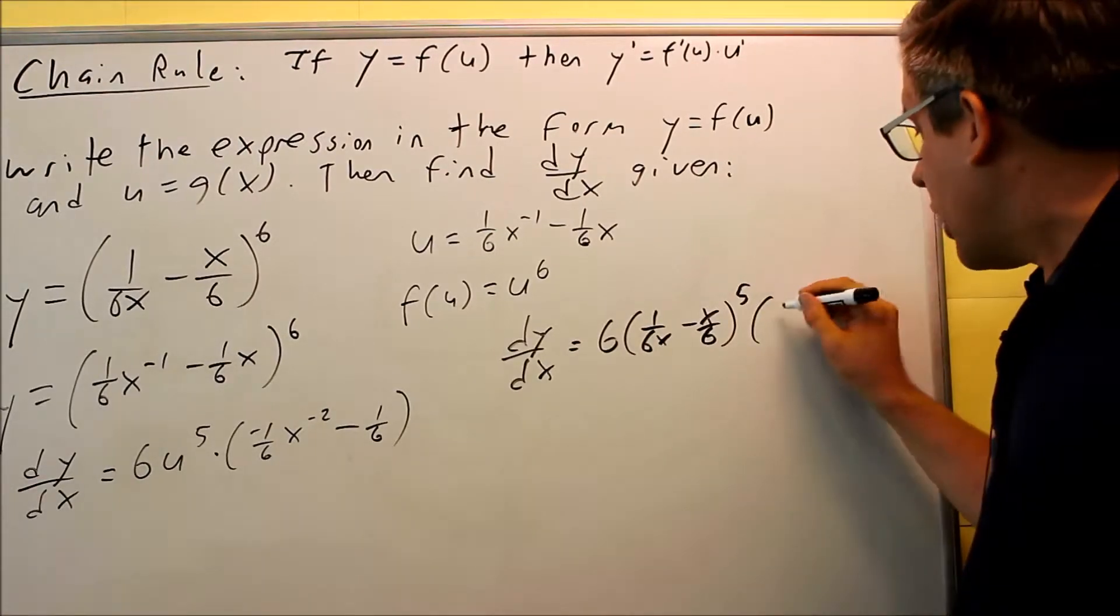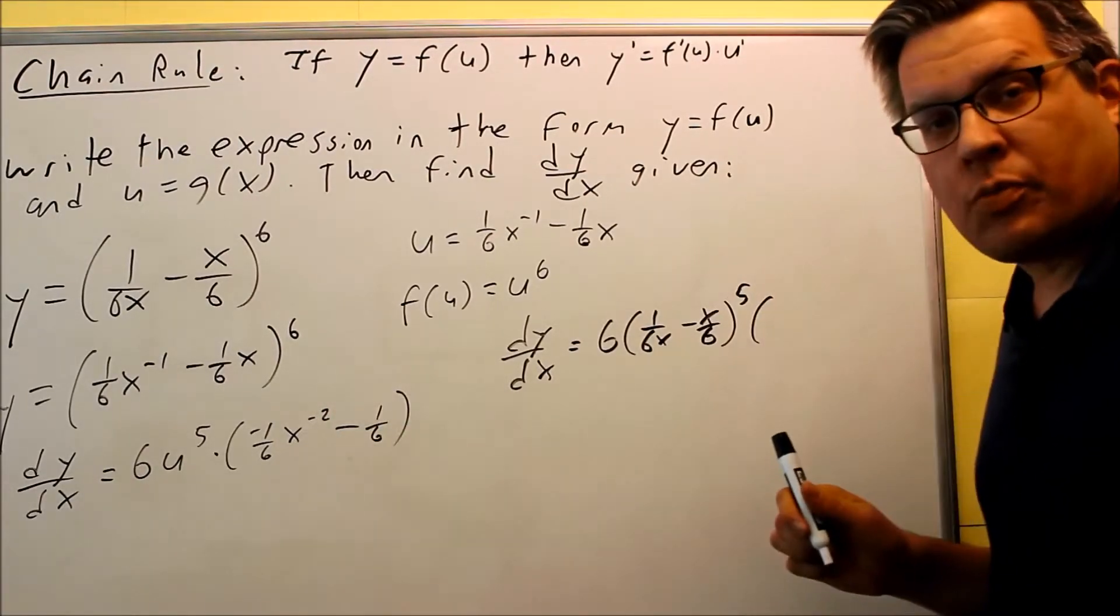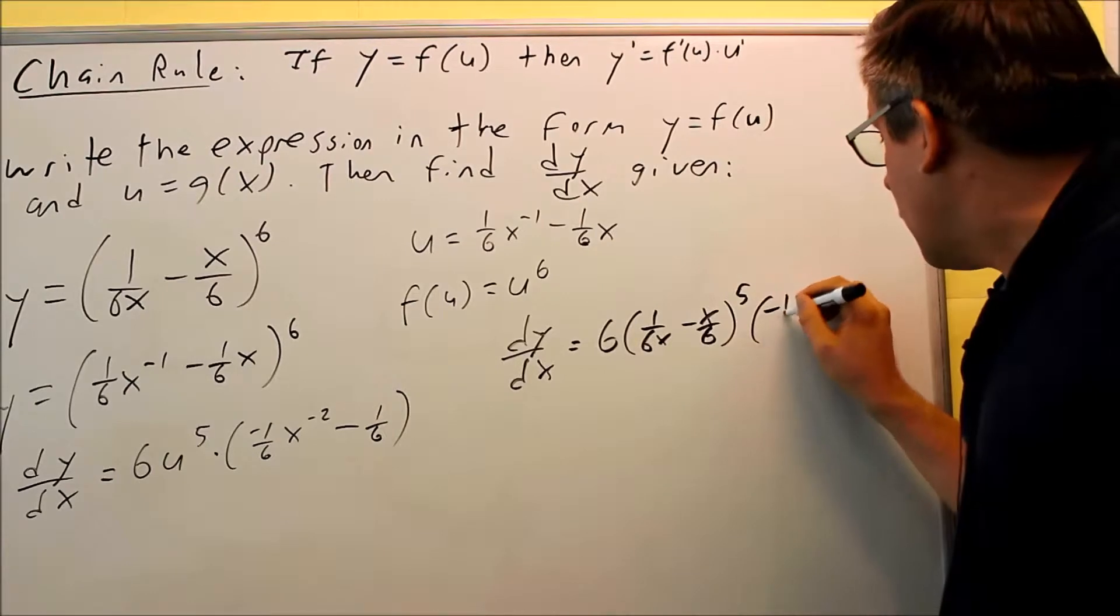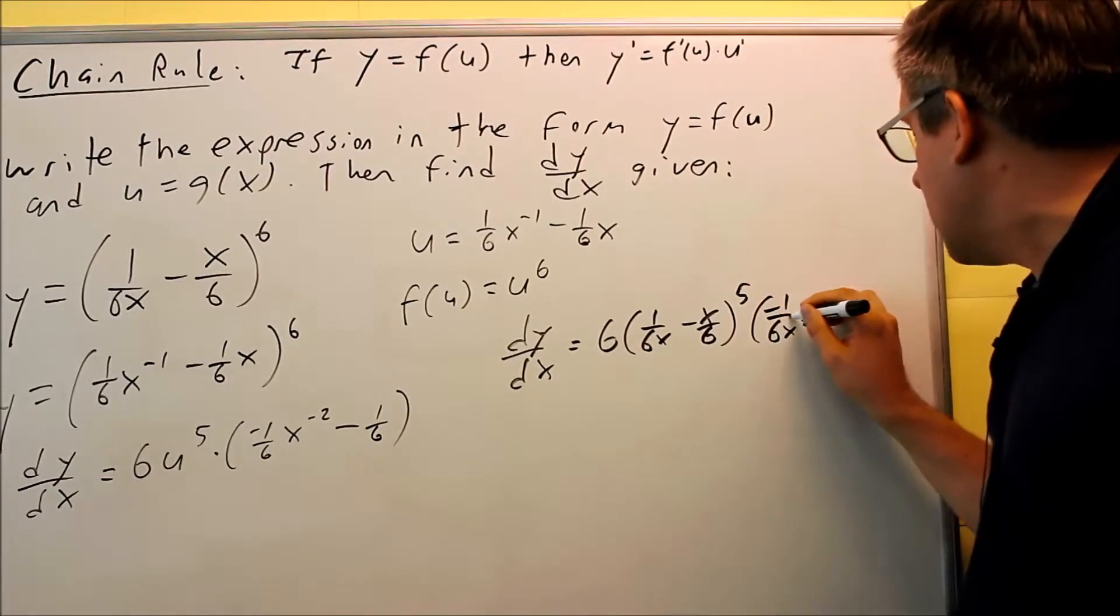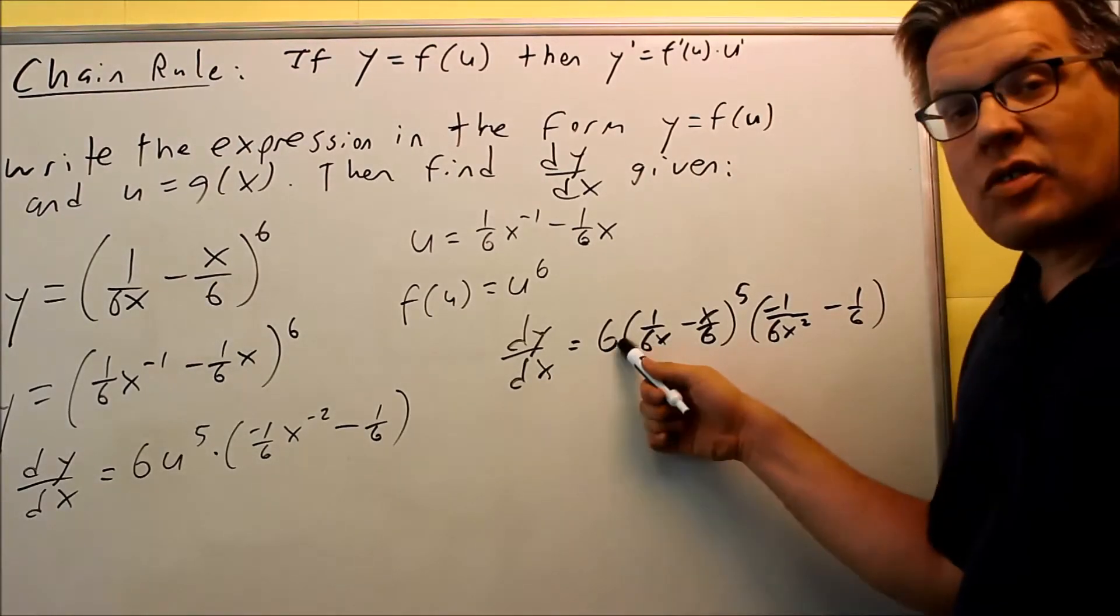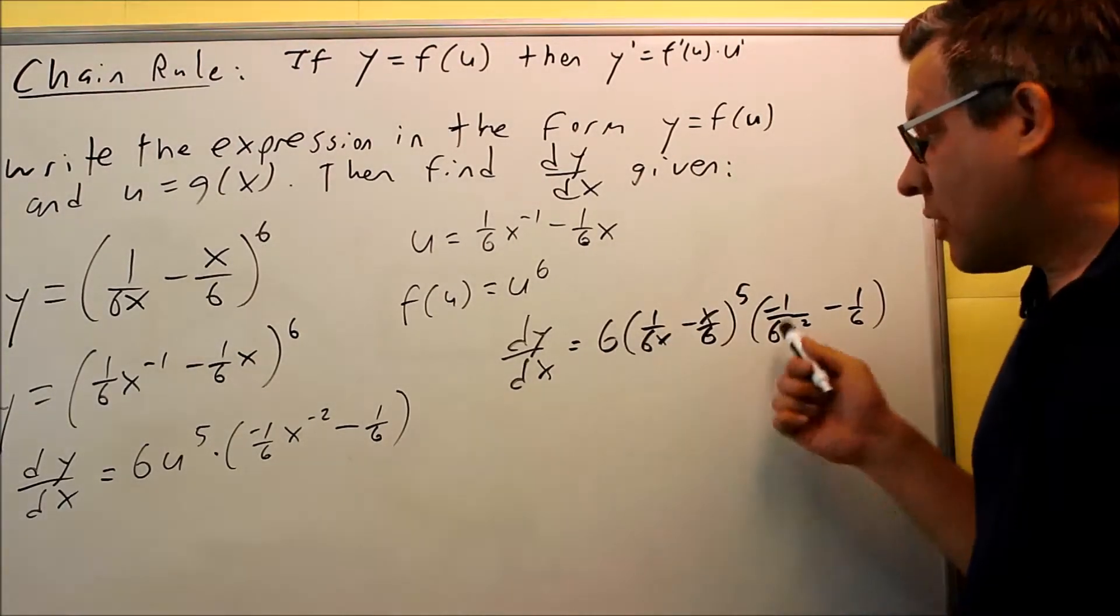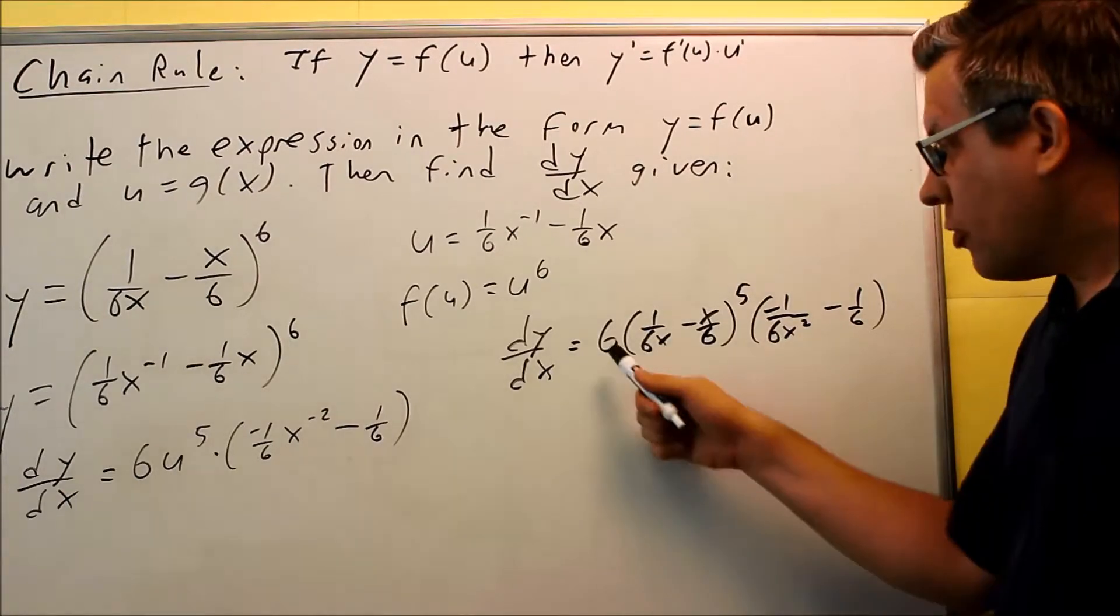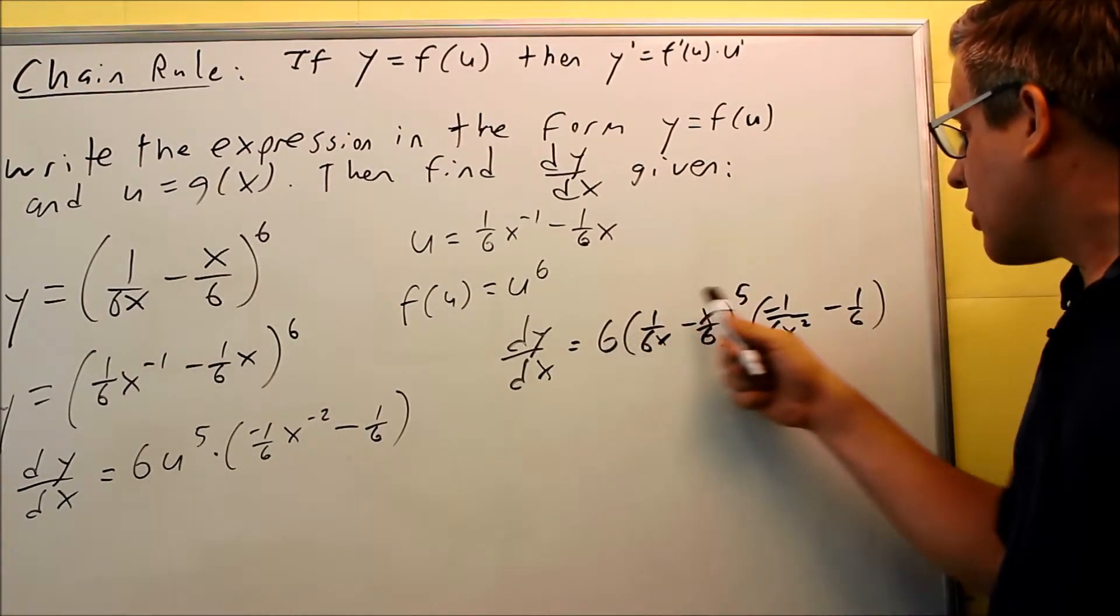Then I have the rest of this. So the rest of that, I'm going to rewrite this with positive exponents. I have negative 1 over 6x squared, and then minus 1 sixth. Because I have a 6 on the outside, that allows me to clean up my answer a little bit more. Because the 6 here, if I multiply it through, you can multiply in any order.